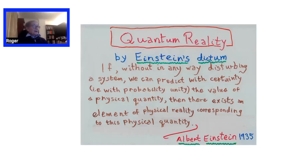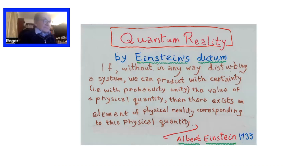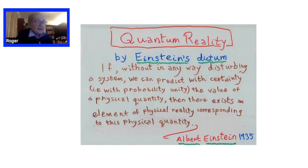I want to distinguish between two possible points of view, and this is what I really want to talk about: what I'm calling quantum reality. Quantum reality depends on what I'm calling Einstein's dictum. Einstein said: if without disturbing the system I can make a measurement on the system, and with certainty it tells you things are either at one location or the other, then that gives it an element of reality. So if you can make a measurement which doesn't disturb the system, then the result of the measurement is something real about it. He put this forward in 1935. I'm calling this Einstein's dictum.